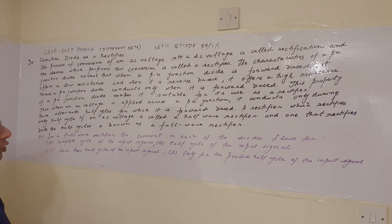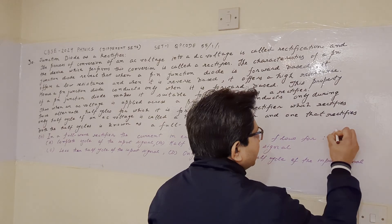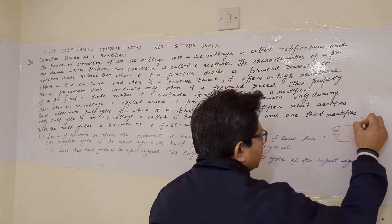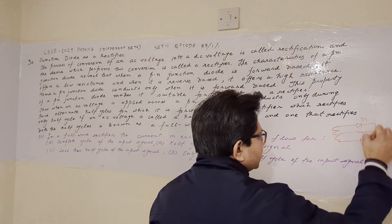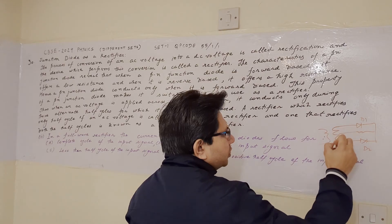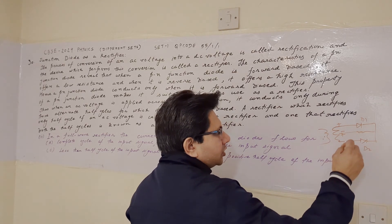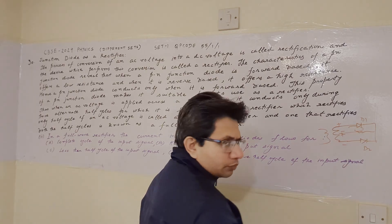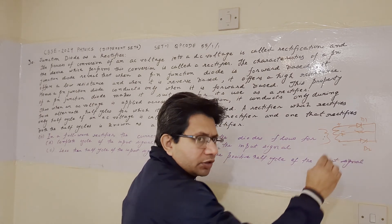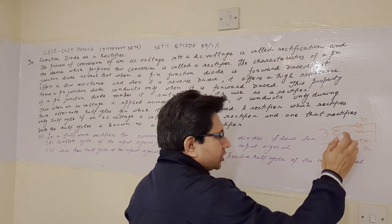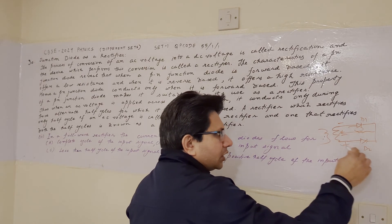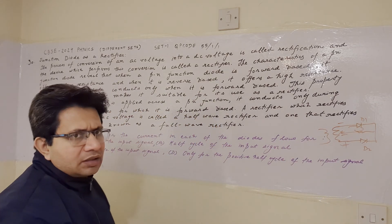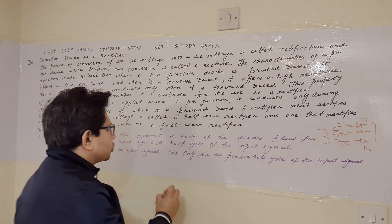The problem is based on the full wave rectifier. In a full wave rectifier we have the secondary side with diode D1 and diode D2, and a load resistance. For the first half cycle, this terminal is positive — diode D1 conducts and D2 is off. For the other half cycle the polarity reverses, so D2 conducts and D1 is off. Therefore each diode conducts for only half the cycle, so option B is the correct option.